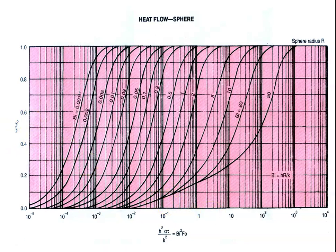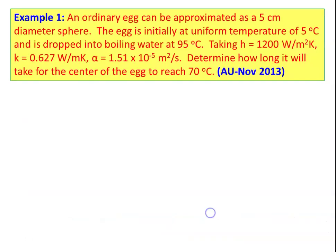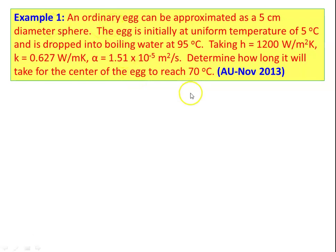These are the procedures to solve a one-dimensional unsteady state problem in a sphere. Now we take examples to understand the theory. Example number 1 is from the Anna University question paper, November 2013: An ordinary egg can be approximated as a 5 centimeter diameter sphere. The egg is initially at a uniform temperature of 5°C and is dropped into boiling water at 95°C. Given: h = 1200 W/m²·K, k = 0.627 W/m·K, thermal diffusivity α = 1.5 × 10⁻⁵ m²/s. Determine how long it will take for the center of the egg to reach 70°C.